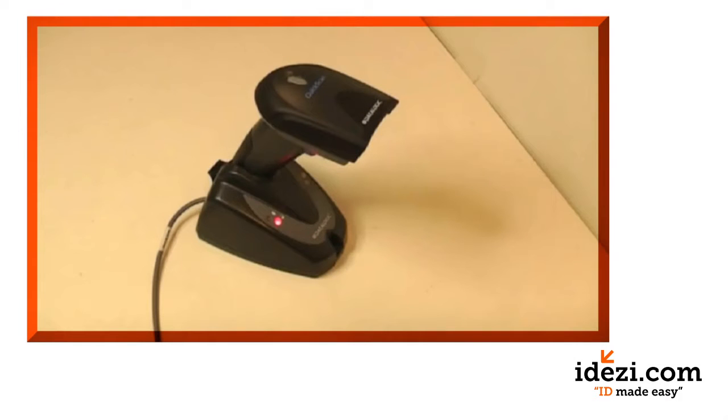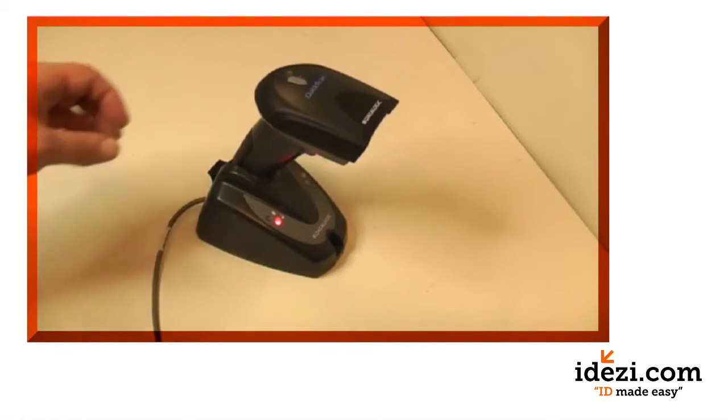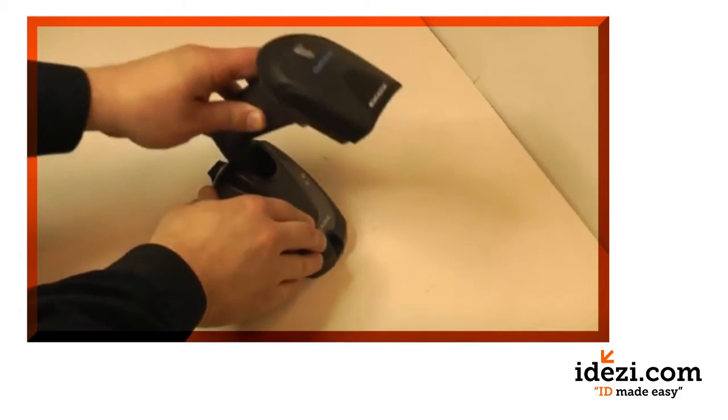To use the QuickScan Mobile barcode scanner, you must first perform the initial setup on the unit. After the unit has a strong enough charge, you will need to use the Quick Reference Guide to program the unit.